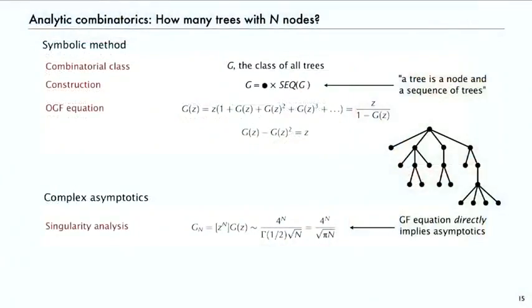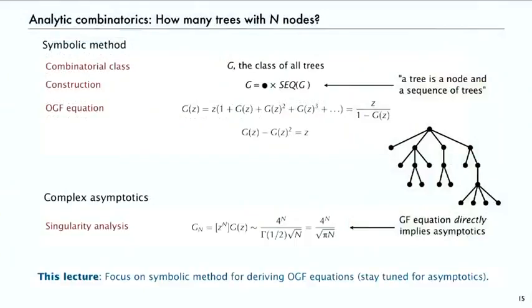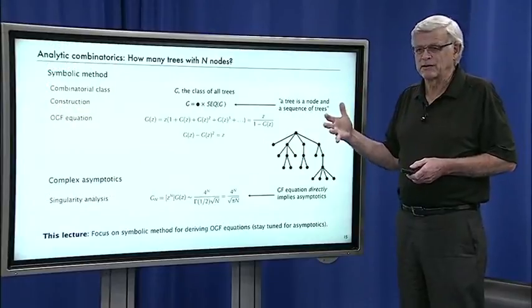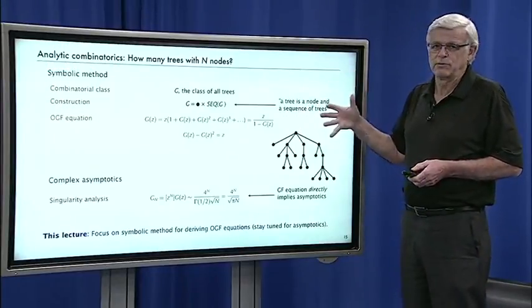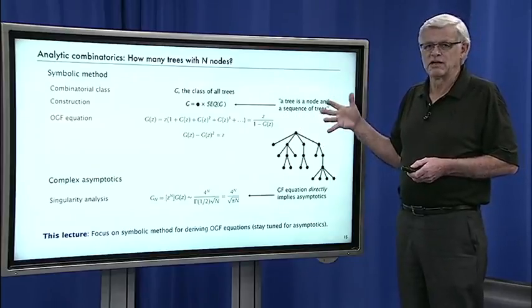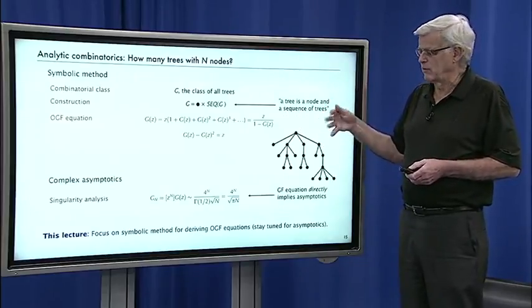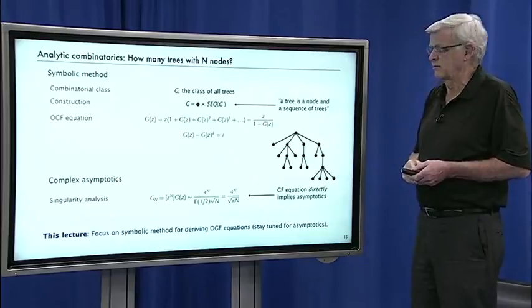That's what we're going to talk about later for this example. And for this lecture, we're going to look at lots of examples where we just stop at the generating function equation. So that's our goal, is to use the symbolic method to derive generating function equations. That's what we're going to be talking about for the next couple of lectures. And then we'll go into how do we get the asymptotic results out.